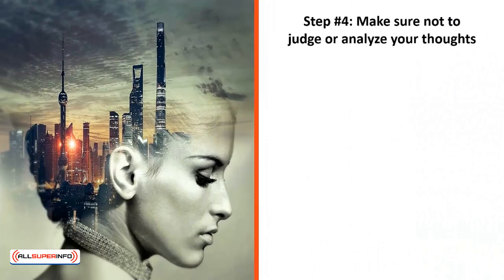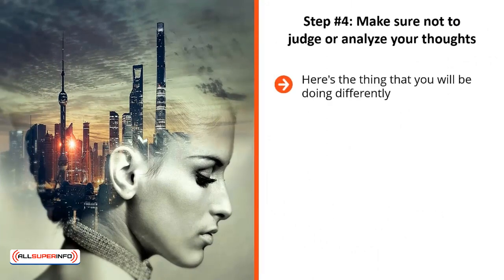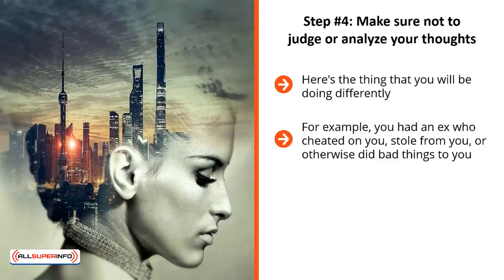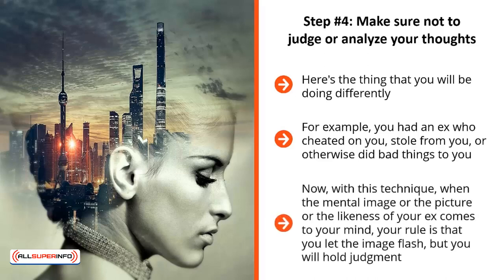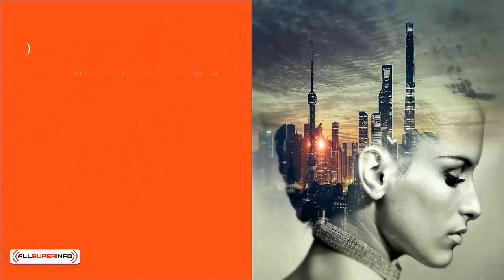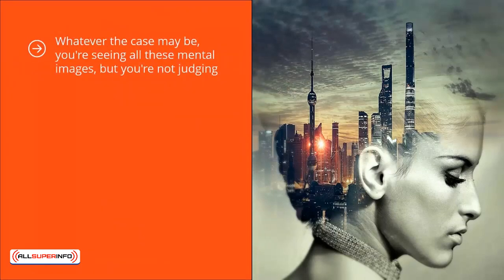Step number four: make sure not to judge or analyze your thoughts. Most people have no problem seeing mental images flash through their mind, but the problem is they get all emotionally caught up. For example, you had an ex who cheated on you, stole from you, or otherwise did bad things to you — you probably don't feel all that good. With this technique, when the mental image of your ex comes to mind, your rule is that you let the image flash but hold judgment. You're not going to analyze it. Just acknowledge: this is the image of my ex, this is my boss, this is a scene from my childhood. You're seeing these mental images but not judging — you are acknowledging. It's very important you know the distinction.